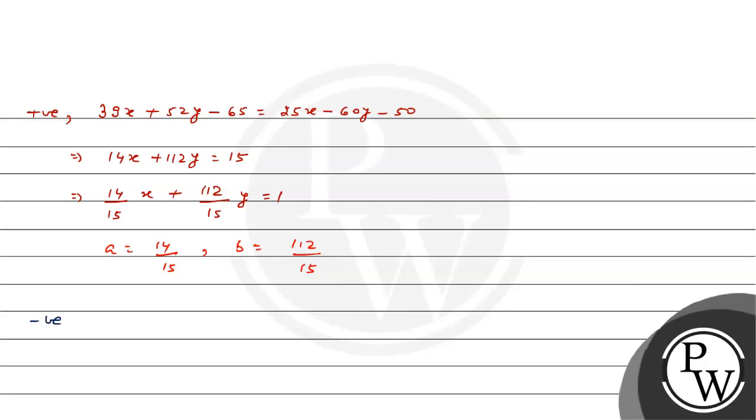By taking the negative sign, the same thing, but sign will be negative. That is 39x plus 52y minus 65 or all negative, that is minus 25x plus 60y plus 50.